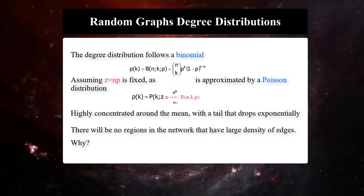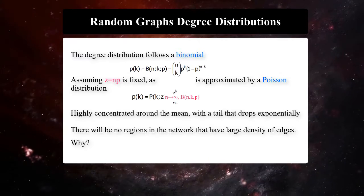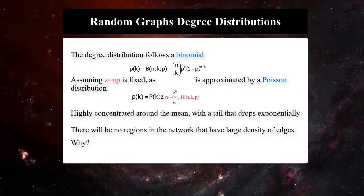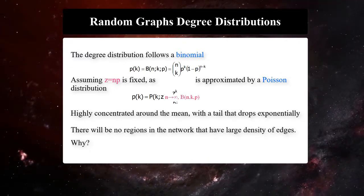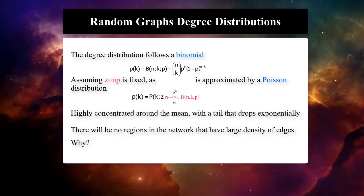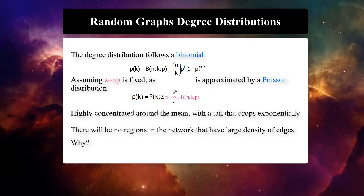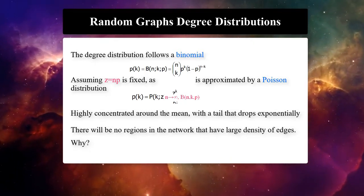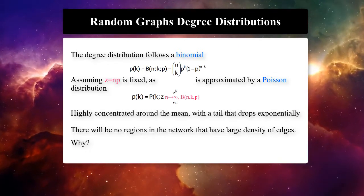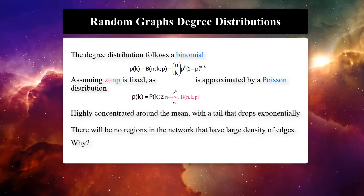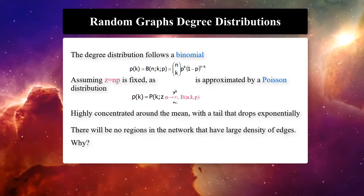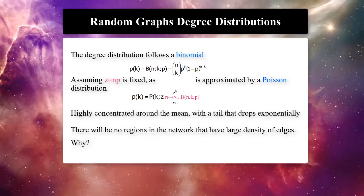The degree distribution of an ER graph follows a binomial distribution. But for a large ER network, it can be approximated by a Poisson distribution. The tails of the degree distribution of an ER graph are typically narrow, meaning that the node degrees tend to be tightly clustered around the mean degree. There will be no region in the network that has a large density of edges.